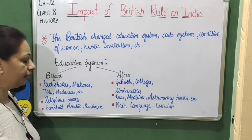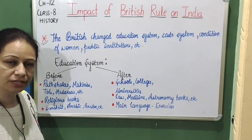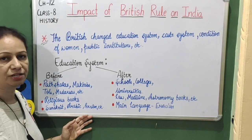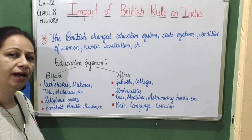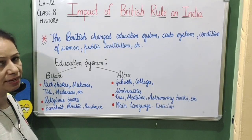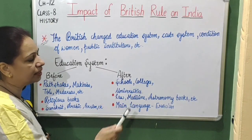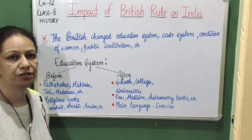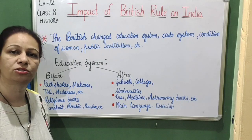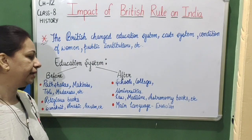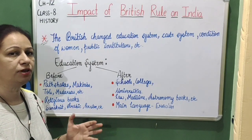The main languages of instruction were Arabic and Persian. These were the main languages before the British rule came. After the British rule, many changes were made. Many vernacular schools, colleges, and universities were set up. Our education was no longer limited to religious books.